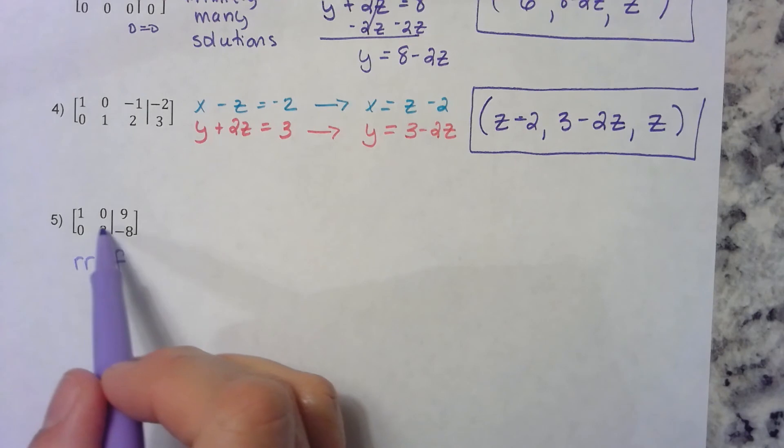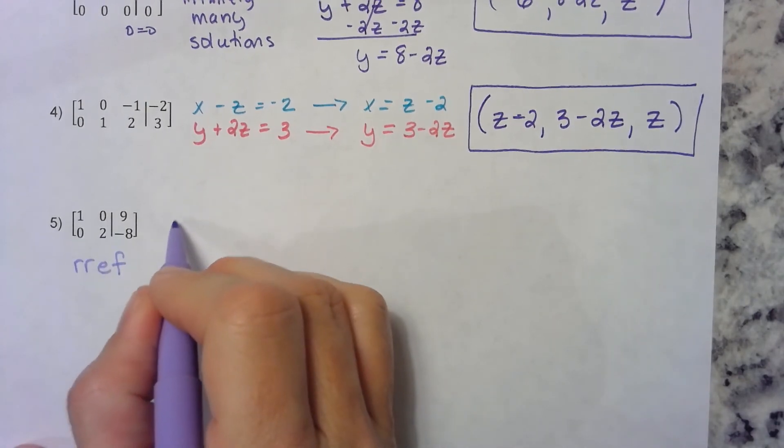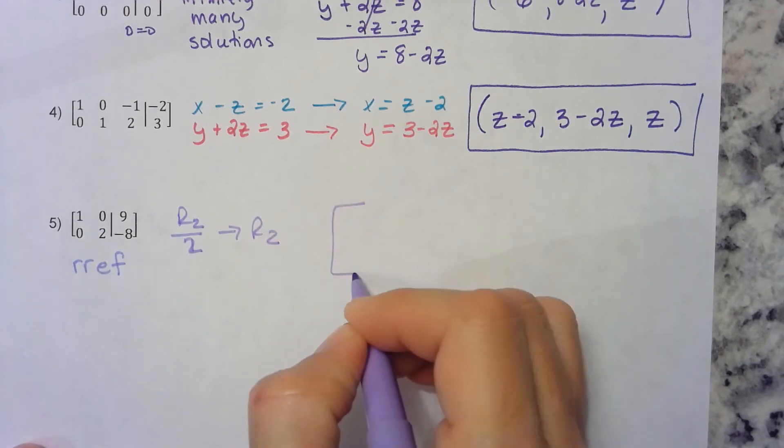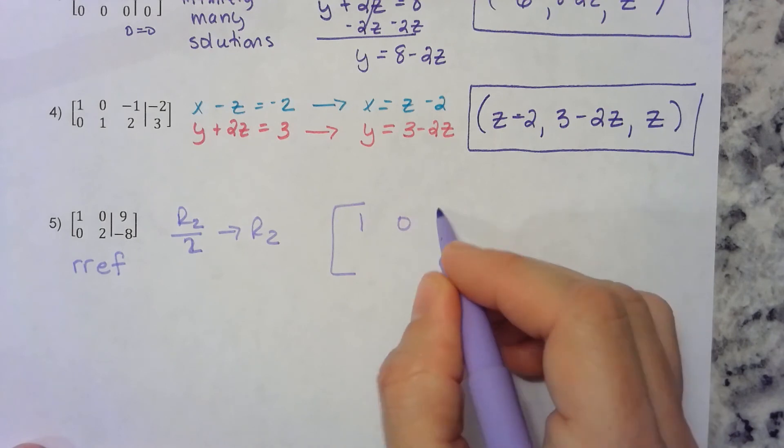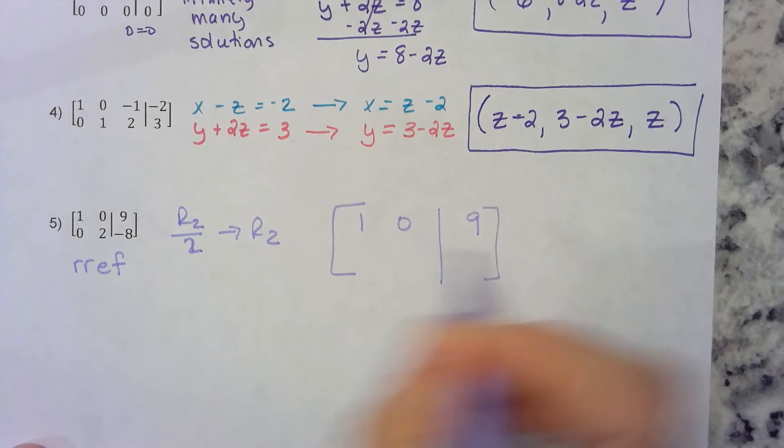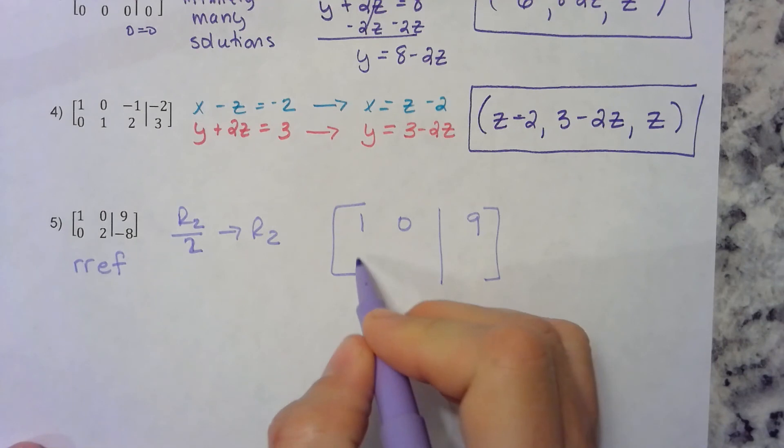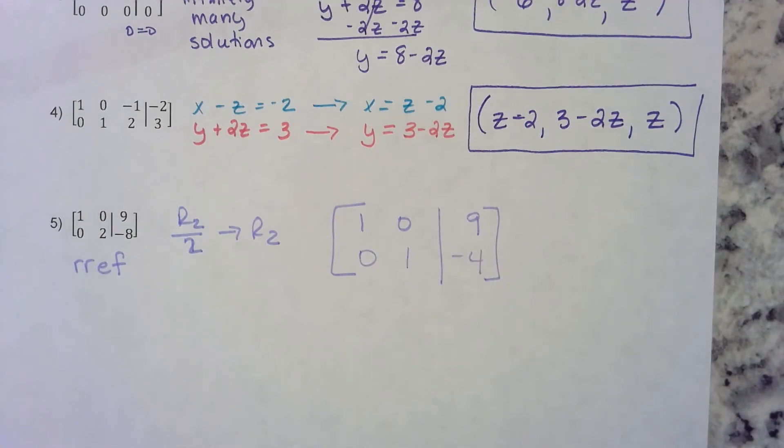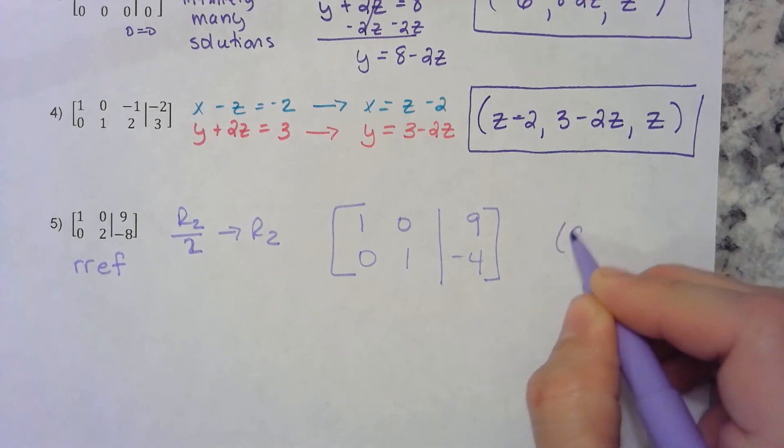We can finish it by saying row 2 divided by 2 will give me a new row 2. Let's do that. Row 1 stays the same, but everything in row 2 gets divided by 2. Now it is in the correct form.